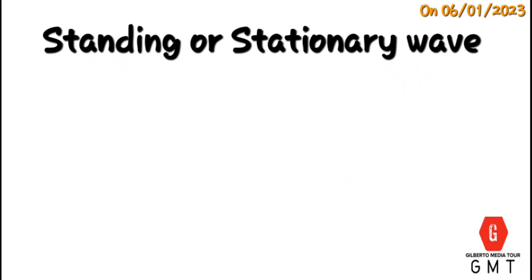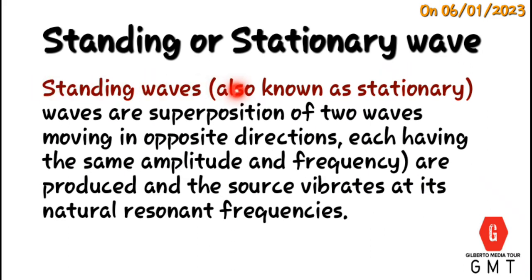Standing or stationary waves are the superposition of two waves moving in opposite directions, each having the same amplitude and frequencies, and are produced when the source vibrates at its natural sound frequencies.